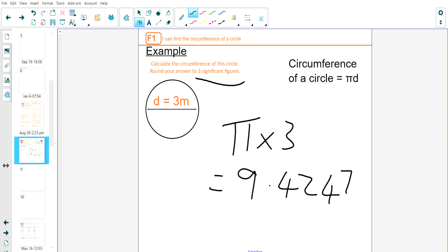I have to make sure that I'm going to round it to three significant figures. That's one, two, and three. I look at the number next to it - does that go up or down? It goes down, so my answer is 9.42 meters.